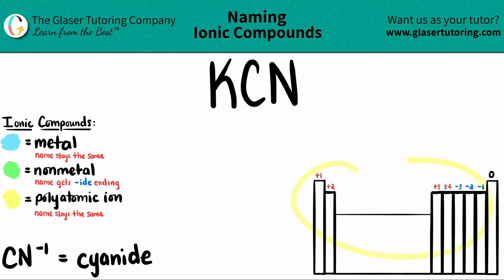Keep in mind that polyatomic ions are never going to be found on the periodic table. They have to be memorized. So I put the one that we're going to be seeing down here. CN is always a negative one charge, which you should know the charge for them. They never change for the polyatomic that you're talking about. And CN is always cyanide. So this right here is our polyatomic.